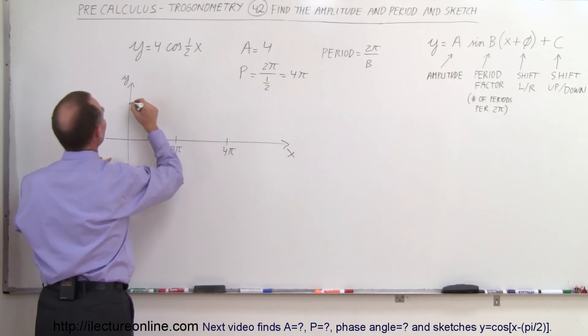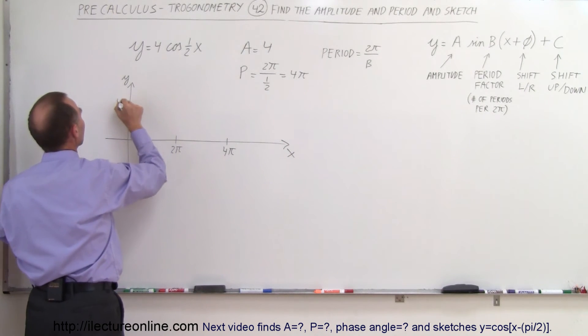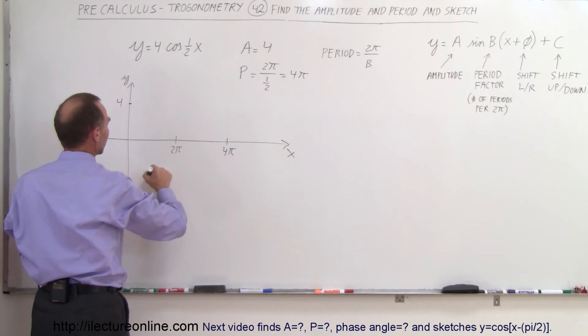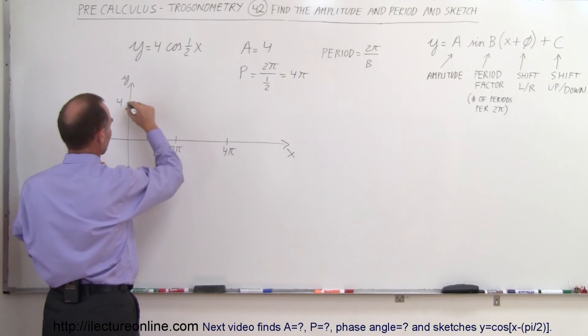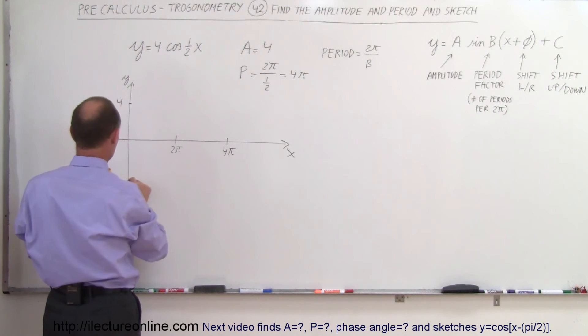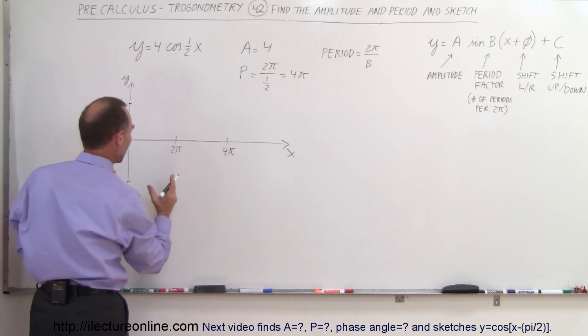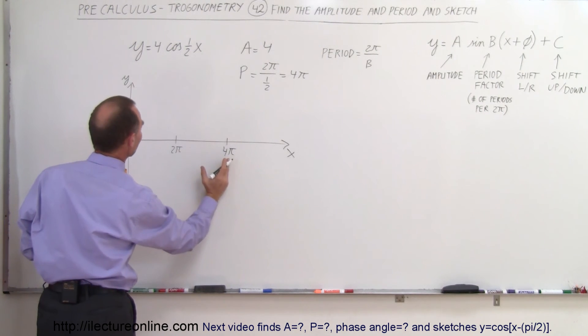The maximum amplitude is given by the 4 right there, and so we come down and let's see here, down that would be minus 4 here, that would be a half a period, that would be a full period.